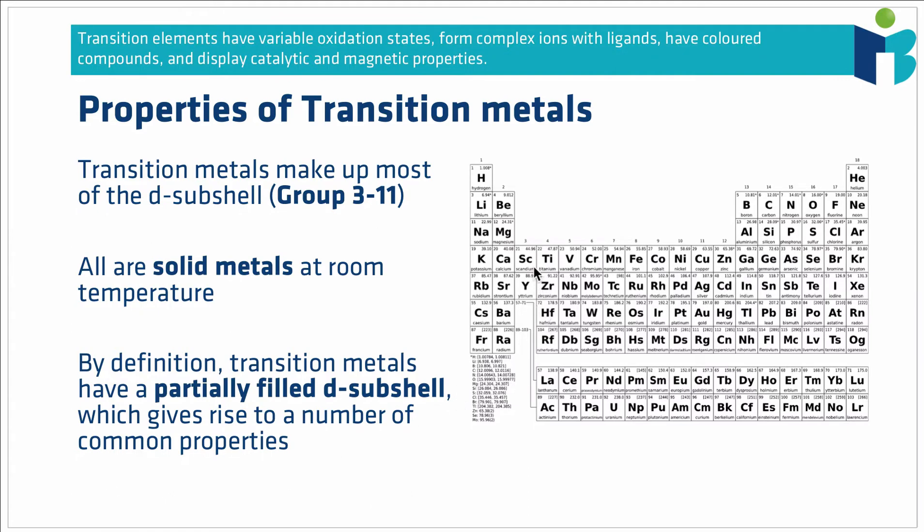Transition metals make up most of the D subshell and they encompass everything from group 3 to group 11. So that's essentially all of the D block except group 12. We find that all of these elements are solid metals at room temperature and the thing that makes them transition metals is the fact that they have a partially filled D subshell and this characteristic electronic configuration gives rise to a number of properties that are common throughout the transition metals.